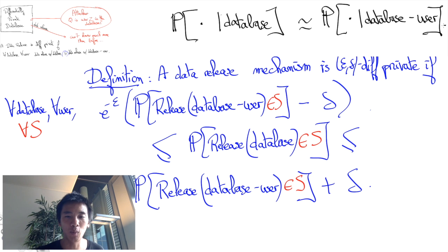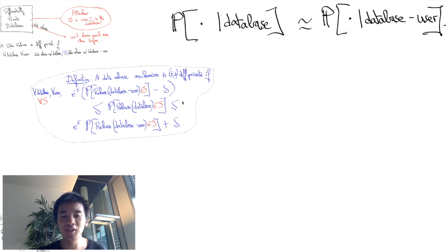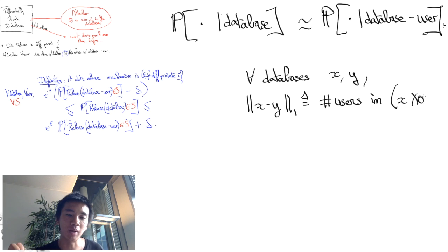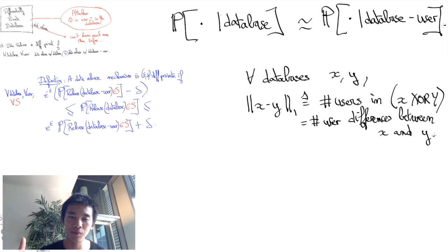In fact, still another way of writing this equation is to determine a distance function between databases. Namely, we will say that the norm 1 of x minus y measures the number of users differences between databases x and y. So typically, if we remove one user from database x to obtain database y, then the distance between x and y will be equal to 1.